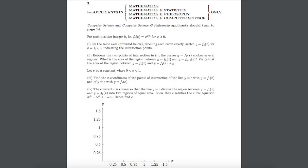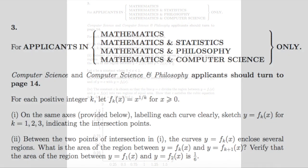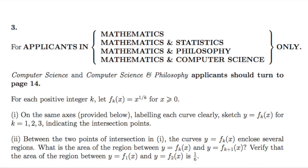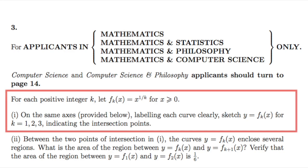Hey everyone, today we're going to look at question 3 from the 2017 MAT exam. Let's get straight into it. The question gives us a function called fk of x, and this equals x to the power of 1 over k, and this is valid for x greater than or equal to 0, and k is a positive integer.